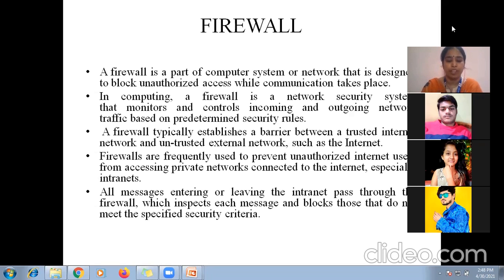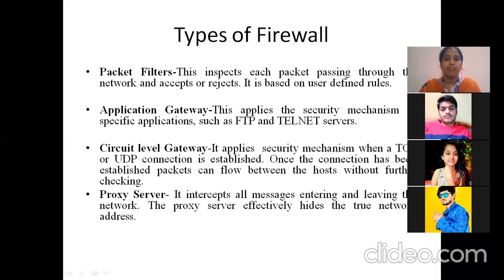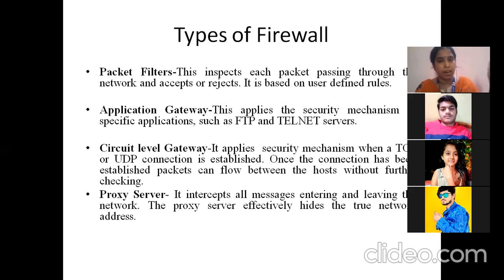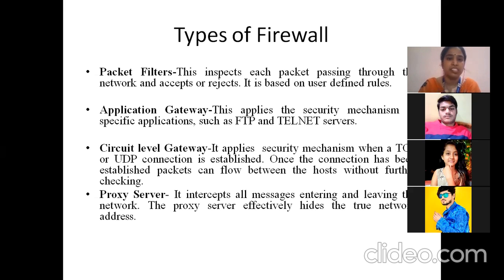Types of firewalls include packet filters, application gateways, circuit level gateways, and proxy servers. These firewalls work on the gateways — the gateways are like the gate of your house. We place someone at the gate to check that only authorized ones enter. At the circuit level, a connection is established in TCP/IP between two parties. Once the connection is verified as authorized, data flows through.